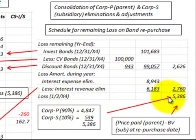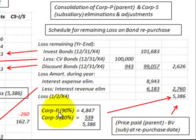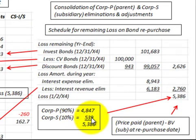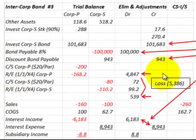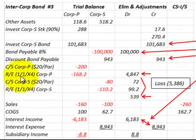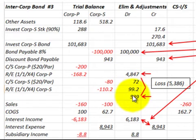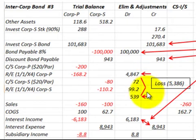That leaves the total loss of $5,386 to account for, divided as calculated. The parent's portion of $4,847 is debited to the parent corporation's retained earnings as of 1/1/X4, and the subsidiary's portion of $539 is debited to the subsidiary corporation's retained earnings as of 1/1/X4. This accounts for the total loss we had to eliminate on this bond repurchase.